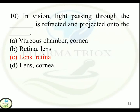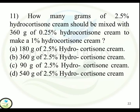Question 11: How many grams of 2.5% hydrocortisone cream should be mixed with 360 grams of 0.25% hydrocortisone cream to make a 1% hydrocortisone cream? Option A: 180 g. Option B: 360 g. Option C: 90 g. Option D: 540 g of 2.5% hydrocortisone cream. Correct answer is Option A — 180 grams of 2.5% hydrocortisone cream.